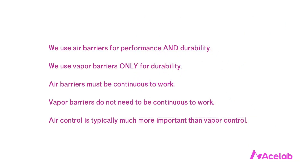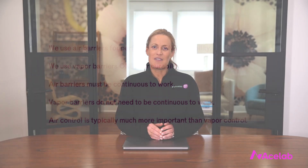In summary: in building design we use air barriers for performance and durability; we use vapor barriers only for durability. Air barriers must be continuous to work; vapor barriers do not need to be continuous to work; and air control is typically much more important than vapor control. This discussion of air and vapor control has obviously not been exhaustive, but I hope it has brought some clarity to a difficult subject. I cover this much more thoroughly in my course Building Science for Architects, which I hope that you'll consider taking.